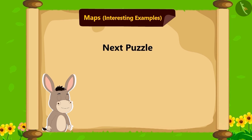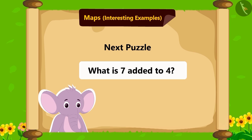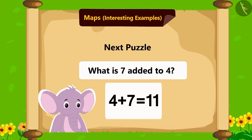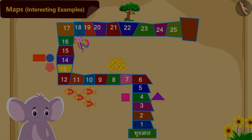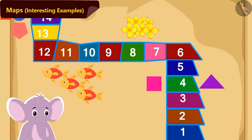Bhola's next puzzle is: Which tile is 7 steps ahead of tile number 4? Children, do you know its answer? How much is 7 added to 4? 11. So, 7 steps ahead of 4 is tile number 11.